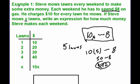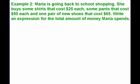This expression models this situation. Let's take a look at another example. Here's example 2. Maria is going back-to-school shopping. She buys some shirts that cost $25 each, some pants that cost $50 each, and one pair of shoes that costs $65. Write an expression for the total amount of money that Maria spends. Pause the video, write this problem down, and see if you can come up with an expression before continuing.